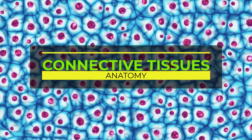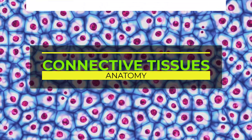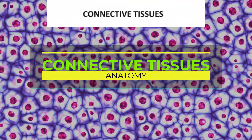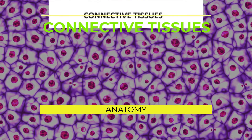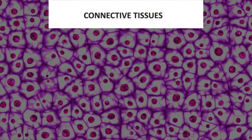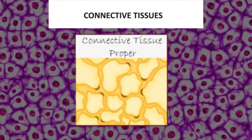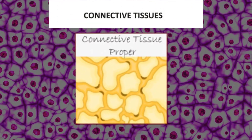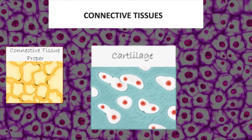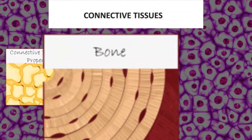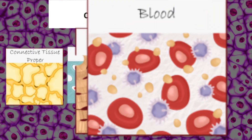Connective tissues. The four types of connective tissues include connective tissue proper, cartilage, bone, and blood.